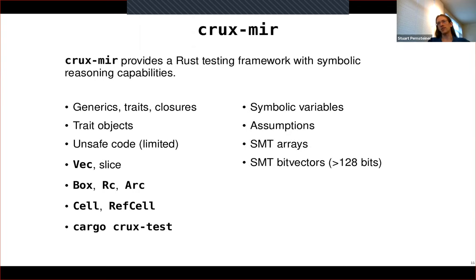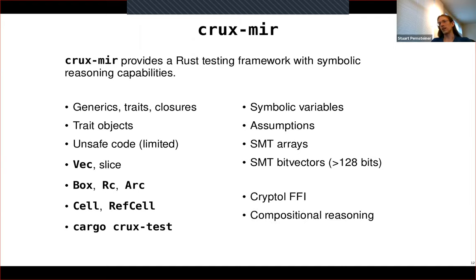On the symbolic reasoning side, you can create symbolic variables and set assumptions over those variables to constrain the values the test will look at. There are bindings that give you access to the SMT arrays and bit vectors of the underlying solver, which can make some proofs more efficient. For advanced features, we have an FFI for calling Cryptol, which is a specification language for cryptographic algorithms. This is really useful for directly asserting that the output of your Rust implementation of some algorithm is identical to the output of the Cryptol spec. We also have compositional reasoning, where you can prove that a property holds of some function and then use that fact when reasoning about callers of that function.